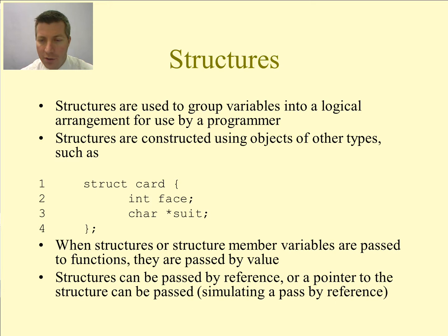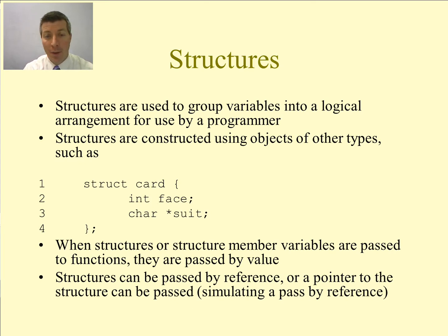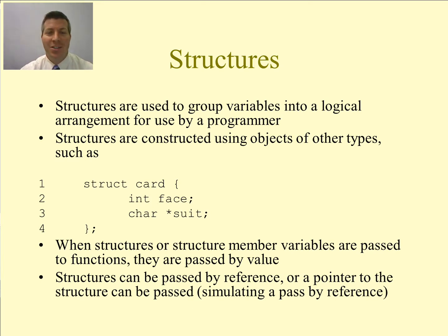So to start off with a review of structures: structures are used to group variables into a logical arrangement for use by a programmer. The program itself — the compiler — is still going to be accessing the variables in individual locations of memory. So it doesn't matter whether we use a structure or something else. The reason that we use a structure is because it makes it easier for a programmer to understand what's happening in the code.